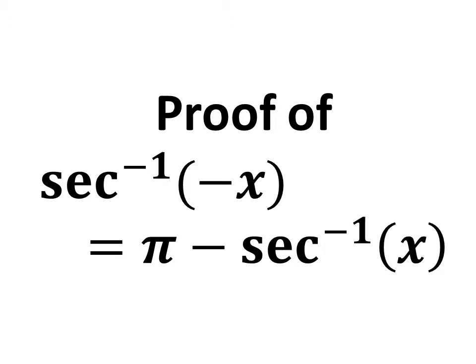It can also be stated as: prove arc secant of minus x is equal to π minus arc secant of x, as inverse secant is also known as arc secant.